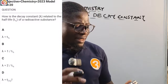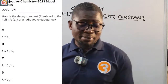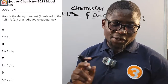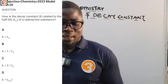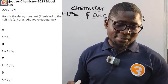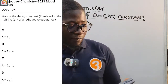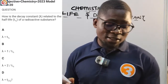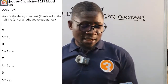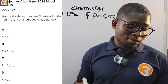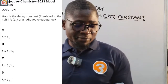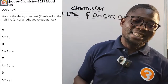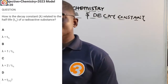Here is a 2023 question number 20: How is the decay constant lambda related to the half-life T-half of a radioactive substance? Option A: lambda equals T-half. Option B: lambda equals 1 over T-half. Option C: lambda equals 2 over T-half. Option D: lambda equals T-half squared.